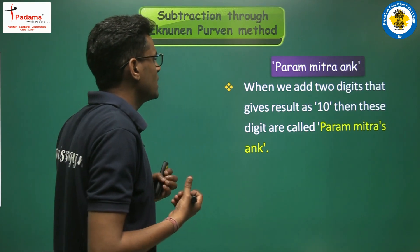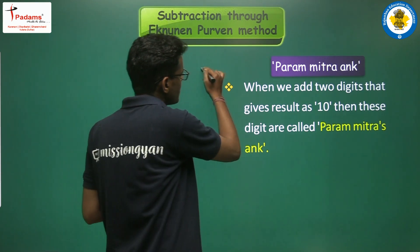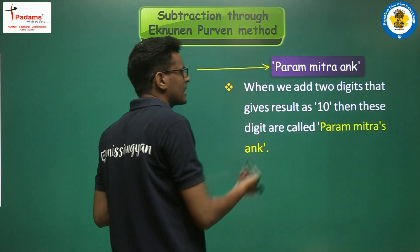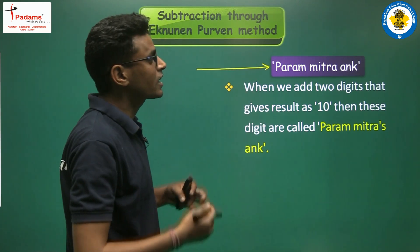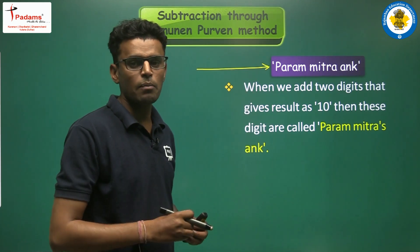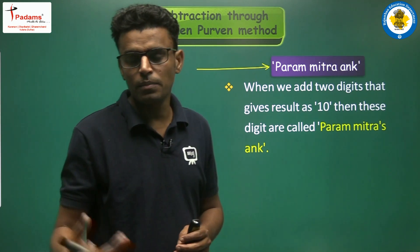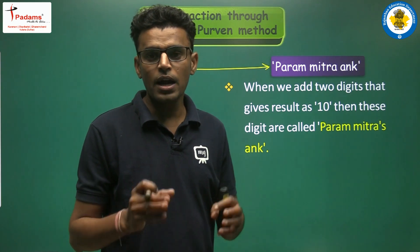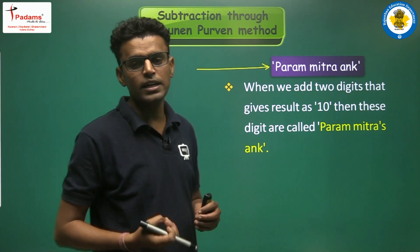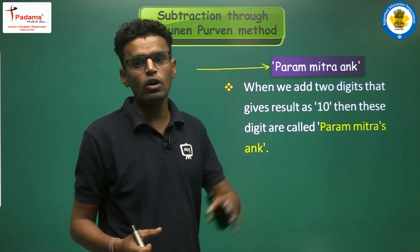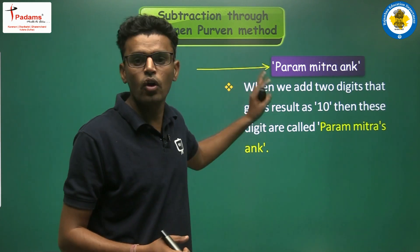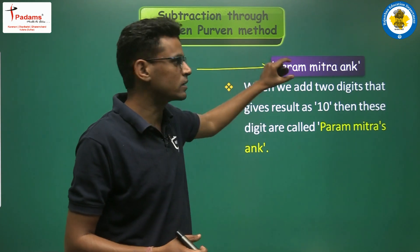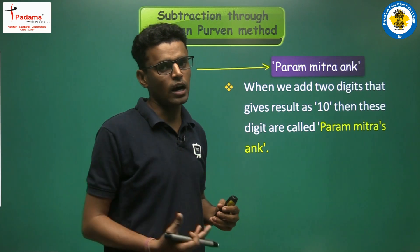In Vedic math, there's a concept called paramitra ankh. Without the help of paramitra ankh, we cannot do subtraction through the Eka Nunaen Poorven method. If we want to do subtraction using this method, we must understand paramitra ankh.